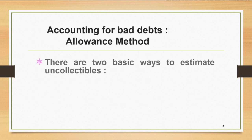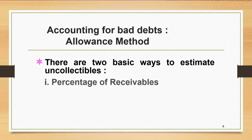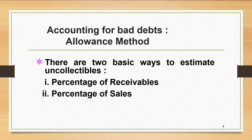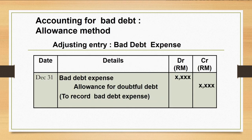Under the allowance method, there are two basic ways to estimate uncollectibles: number one, percentage of receivables, and number two, percentage of sales. The adjusting entry for bad debts expense under the allowance method requires you to debit bad debts and credit allowance for doubtful debts. Allowance for doubtful debts is a contra account to account receivable.